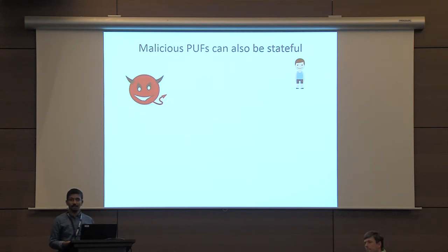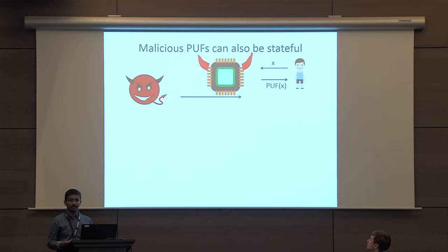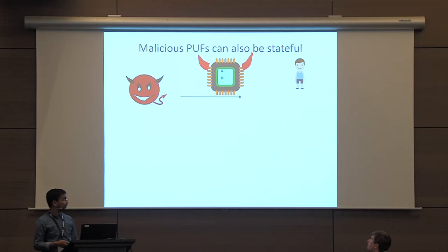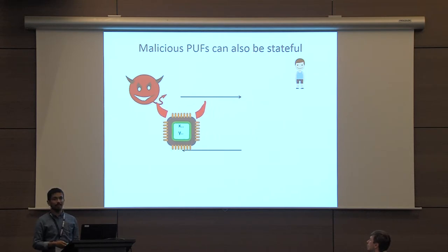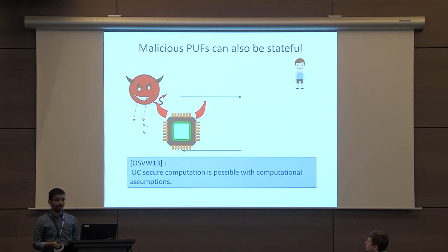Additionally, the adversary might have the power to create stateful malicious PUFs. If an adversary sends a malicious PUF to an honest party, and this party queries the PUF with two strings X and Y, the PUF might store these strings inside it, and then when the protocol demands the PUF be sent back to the adversary, the adversary can look into the PUF and see what those queries were. This is detrimental to security because the adversary literally knows almost all the secret inputs of the honest party. However, Ostrowski and others showed that UC-secure computation is still possible if we allow malicious PUFs, though they require additional computational assumptions.